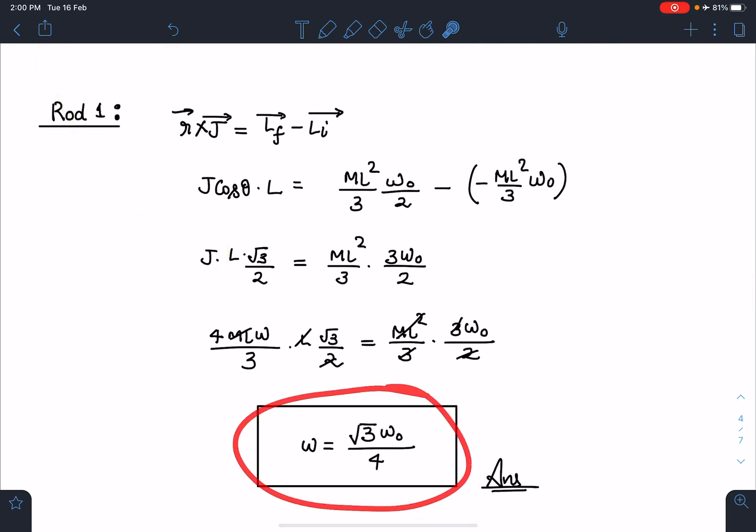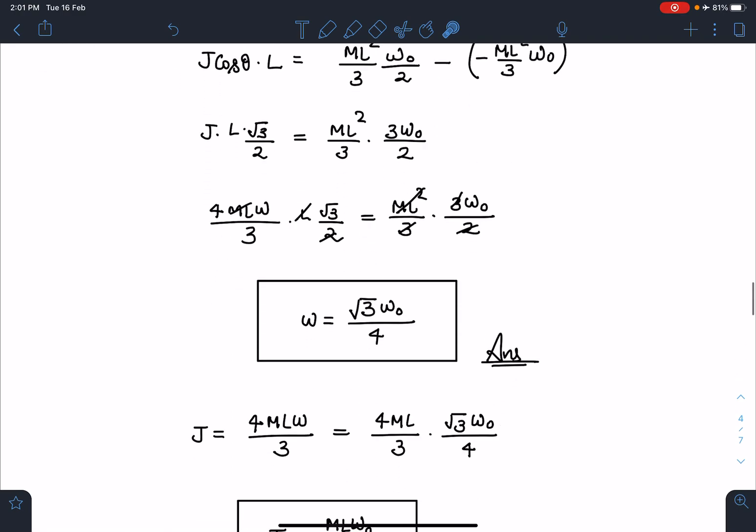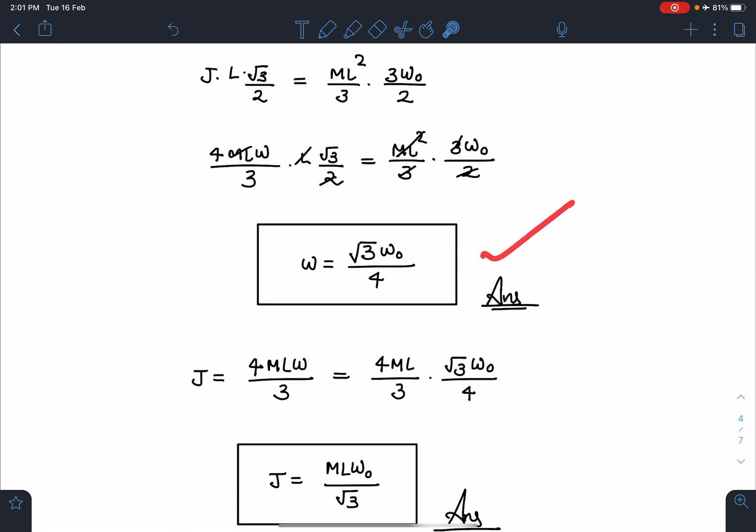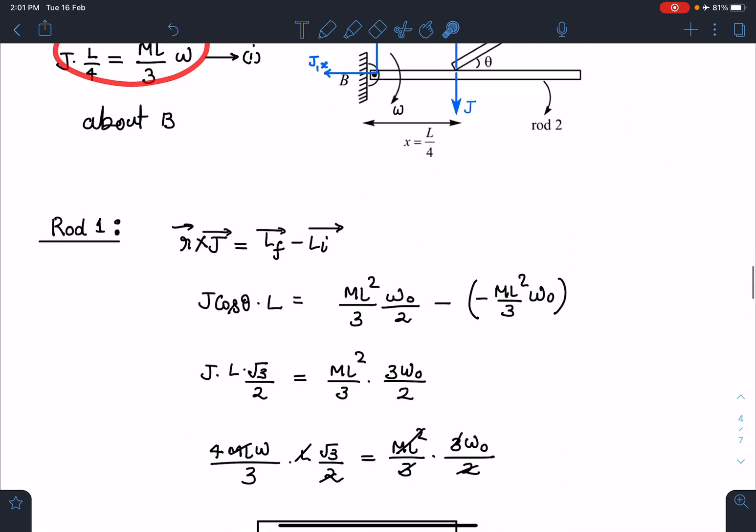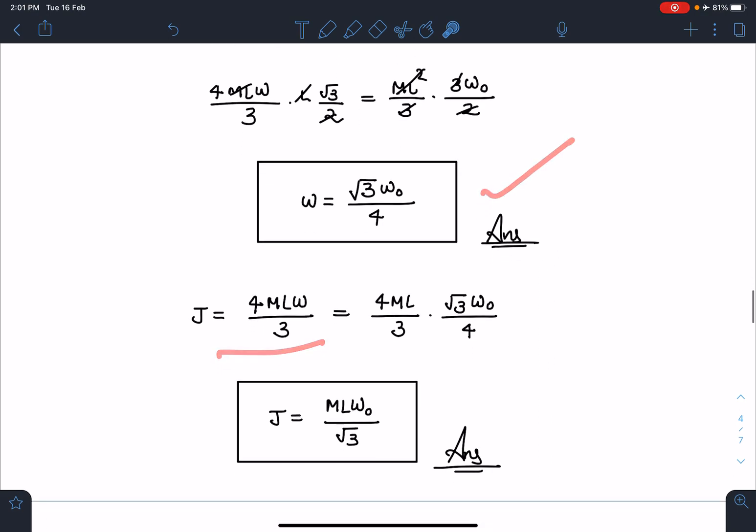Similarly, if I substitute the value of omega in the expression of J, which is 4ML omega by 3 - from here you can see 4ML omega by 3 - so when you substitute here, J value I'm going to get is ML omega naught by root 3. This is the answer for this part.